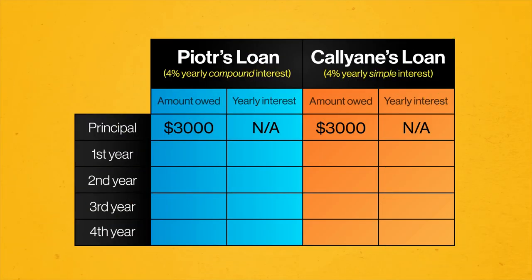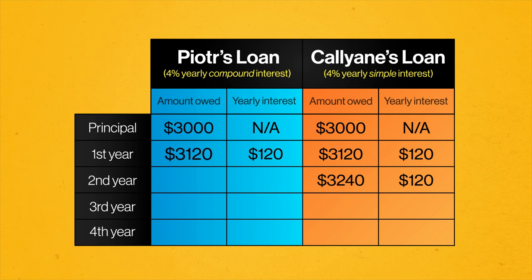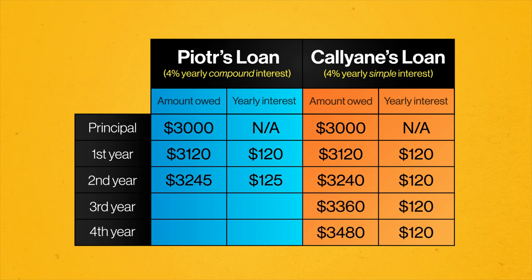After the first year, both Kalyan and Piotr owe the bank the original $3,000 plus $120 in interest. But next year, their accounts start to look different. For loans that involve simple interest, the interest paid every year is exactly the same, so Kalyan owes 4% of her principal, or $120 in interest, every year. So after two years, adding that to the $3,120 she owes from the previous year, her total debt comes to $3,240. But Piotr's loan uses compound interest, so at the end of the second year, instead of multiplying the interest rate by the principal, the bank multiplies it by his entire debt of $3,120. So he owes about $125 in interest for the second year, bringing his total debt to about $3,245 — about $5 more than Kalyan's. Kalyan will always pay $120 in interest, but Piotr's interest payment will keep growing, assuming he doesn't pay off any part of the loan.